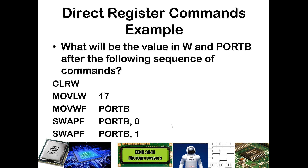Let's trace through what happens after executing the following five commands. You might want to pause the video and work it out yourself first. The approach is to make a table with W and Port B as columns, then trace through each command noting what value is in each register — putting a question mark if the value is unknown. Go ahead and pause the video, work through the example on your own, and then hit play when ready.